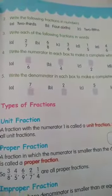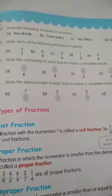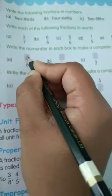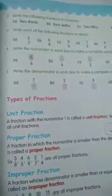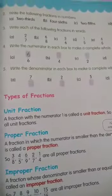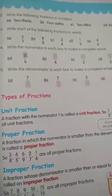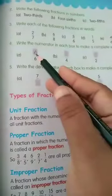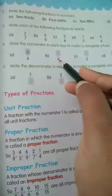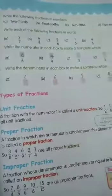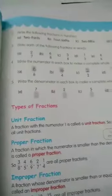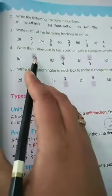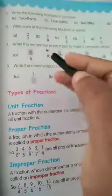Write the numerator in each box to make a complete whole. So here 6 is the denominator, so numerator is also 6. 6 by 6 is a complete whole — whole means 1, so 6 by 6 is 1. We have written numerator 6. Second one B: denominator is 4, so numerator is also 4 — 4 by 4 means 1. C: 2 by 2. D: 5 by 5. Numerator should be the same as the denominator; if we divide 6 by 6 we get 1.